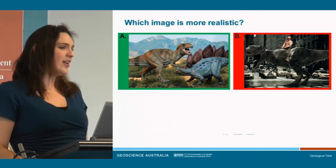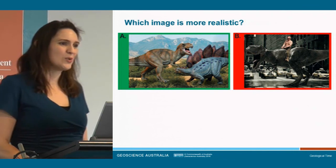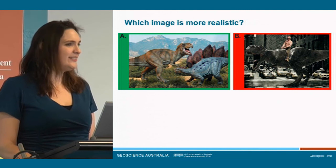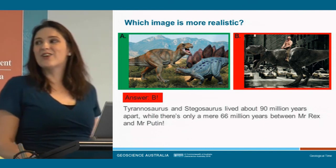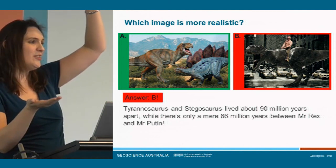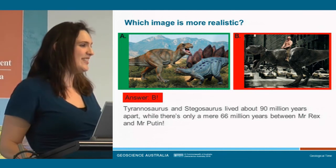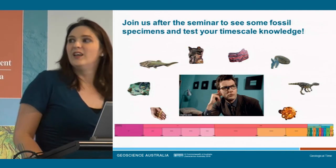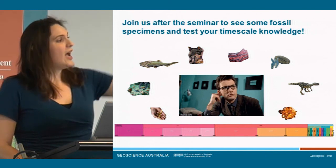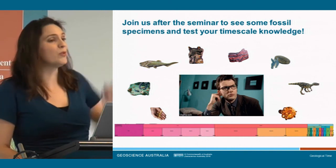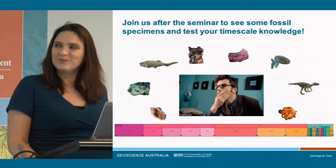There'll be some questions now. Hold up your paper showing A or B — which is the more realistic image keeping geological time in mind? The answer is B. Tyrannosaurus and Stegosaurus have about 90 million years between them, whereas there are only 66 million years between Tyrannosaurus and humans. So B is actually the more realistic image when you take geological time into consideration. Come and have a look at the fossils and rocks on display after the other talks, and there's a timescale on the board where you can guess where various events fall. Thanks very much.